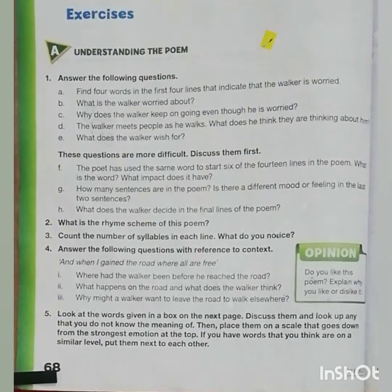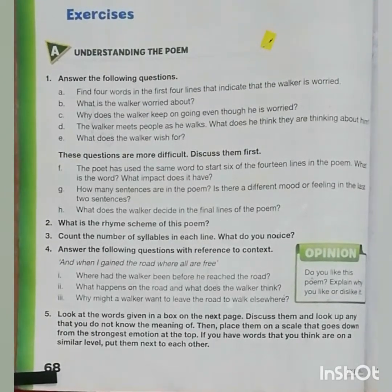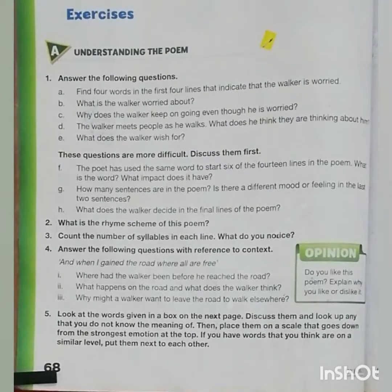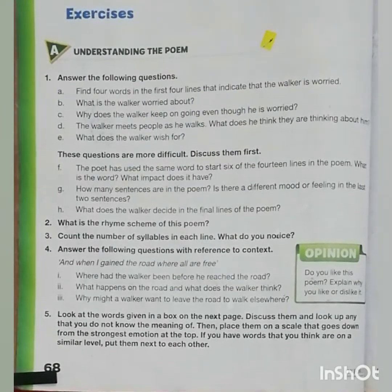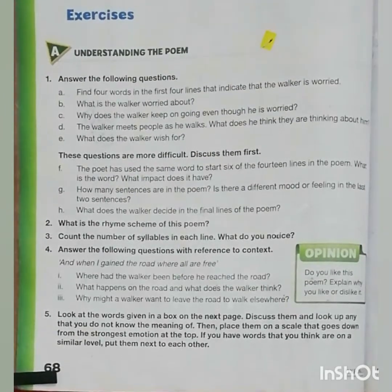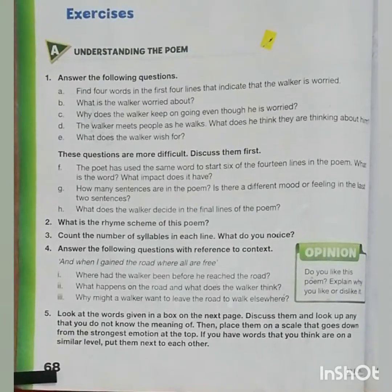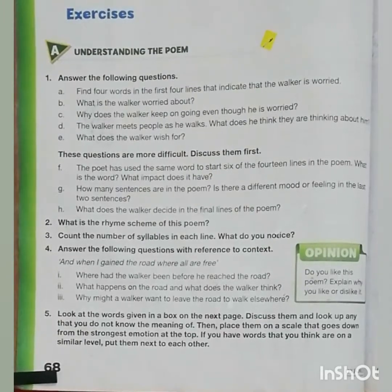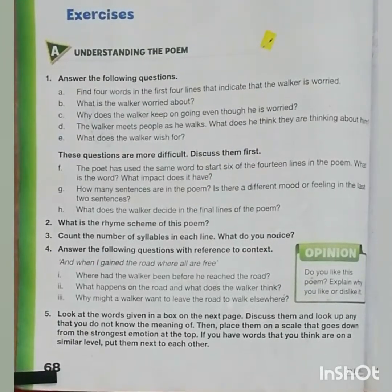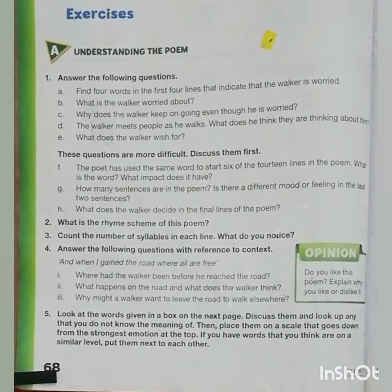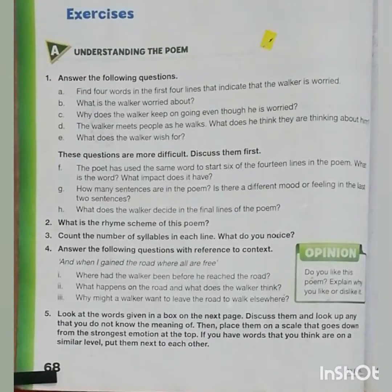In this poem, the old man trespasses someone's land. He has fear of being caught, but he continues his walk because the path is very beautiful and close to nature. But as he reaches the road, he is caught and now he wishes to own this land. And in the final lines, he is thinking to never use someone's land without having permission.